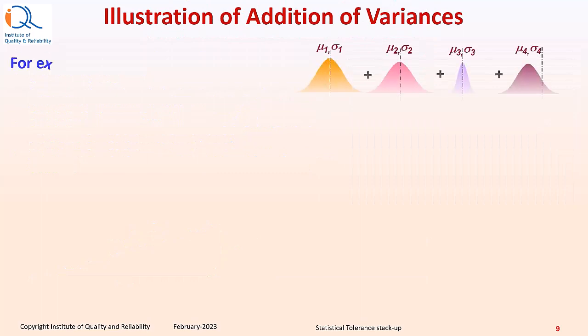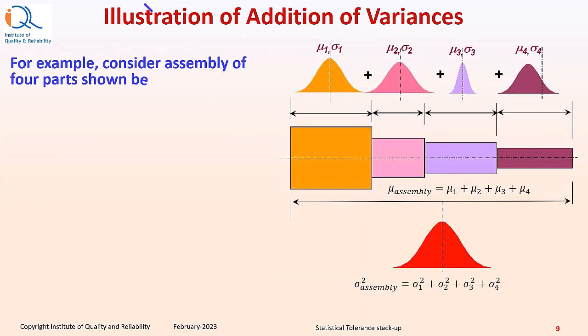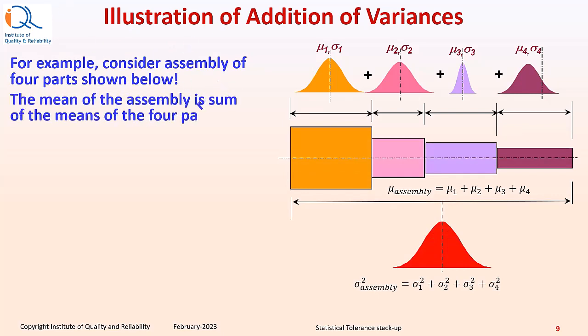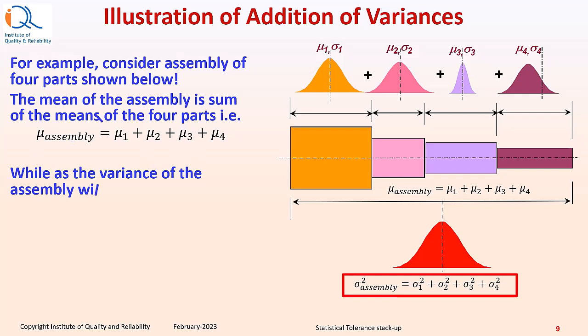Let us see an illustration of addition of variances. For example, consider assembly of four parts as shown in the figure. The mean of the assembly is sum of the means of the four parts, that is mu assembly equals mu 1 plus mu 2 plus mu 3 plus mu 4, while the variance of the assembly will be sigma assembly squared equals sigma 1 squared plus sigma 2 squared plus sigma 3 squared plus sigma 4 squared.